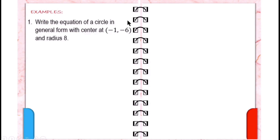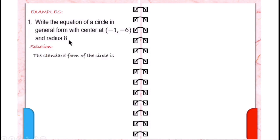Number 1: write the equation of a circle in general form with center at negative 1, negative 6, and radius 8. In this problem, we need to find the general form of the circle given the center and radius. To do that, we first write the standard form since the center and radius are given. Thus, the standard form of the circle is x plus 1 raised to 2 plus y plus 6 raised to 2 equals 8 squared.